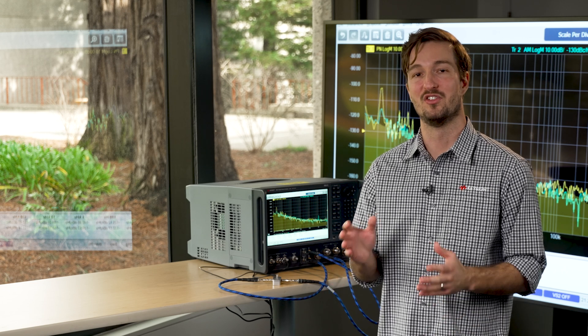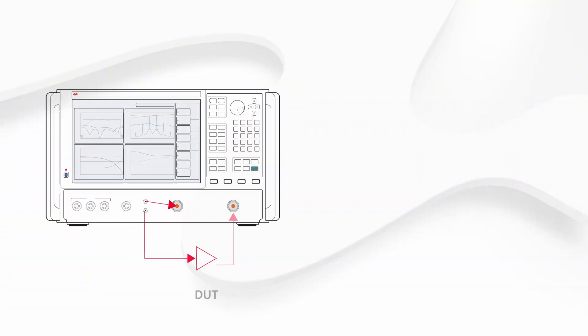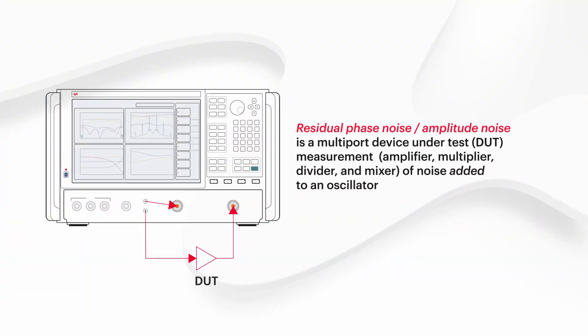Now we're going to make some residual measurements. A residual noise measurement is AM noise or phase noise that is added to an ideal CW signal by a multiport device like a mixer, multiplier, a divider, or amplifier.